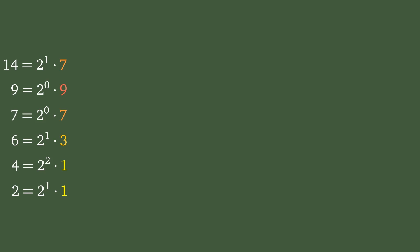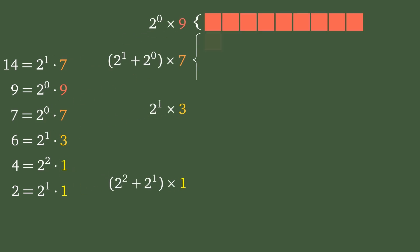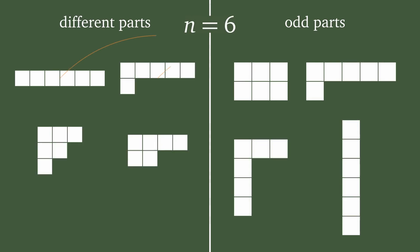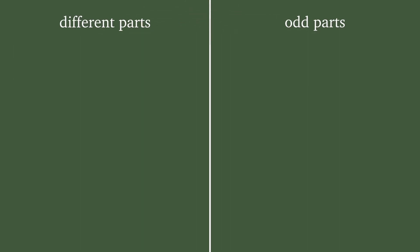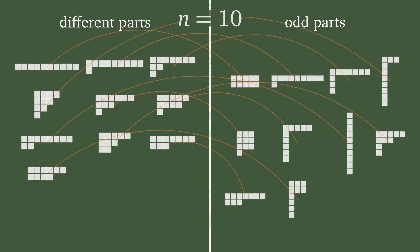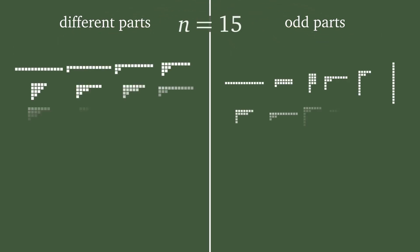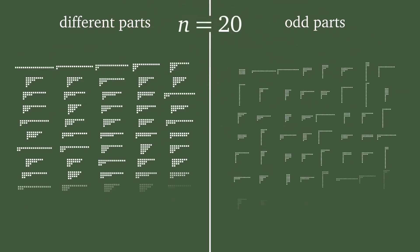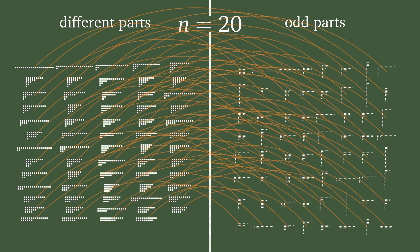It is not overly complicated to reverse this procedure — basically, look at the largest odd factors in all parts and repeat them the correct number of times. Thanks to this construction, we know now that every partition with only odd parts has exactly one counterpart where all parts are different, which, as a consequence, proves Euler's observation that there are always equally many partitions in these special subfamilies.